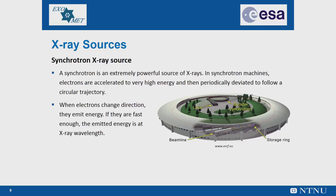How does a synchrotron work? Electrons emitted by an electron gun are first accelerated in a linear accelerator called LINAC, and then transmitted to a circular accelerator, the booster synchrotron, where they reach an energy level of 6 billion electron volts. These high-energy electrons are then injected into a large storage ring, where they circulate in a vacuum environment at a constant energy for many hours. Each time these electrons pass through an undulator, a device consisting of a series of alternating magnets, they emit X-rays, which are directed along beamlines.